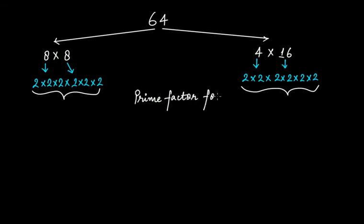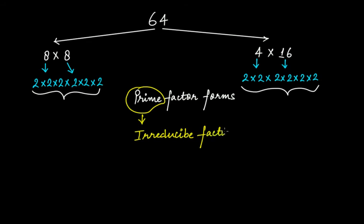Now, if you're wondering why the title says irreducible factor form of algebraic expressions but we've been talking about prime factor form — there is a reason. When it comes to algebraic expressions, we do not use the term 'prime.' Instead of prime, we use the term 'irreducible' — irreducible factor form. The reason is the same: just like a prime number cannot be further broken down, when an algebraic expression is written in its irreducible factor form, you cannot further reduce its factors.